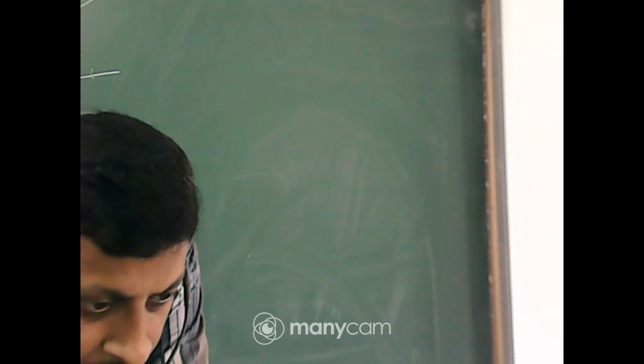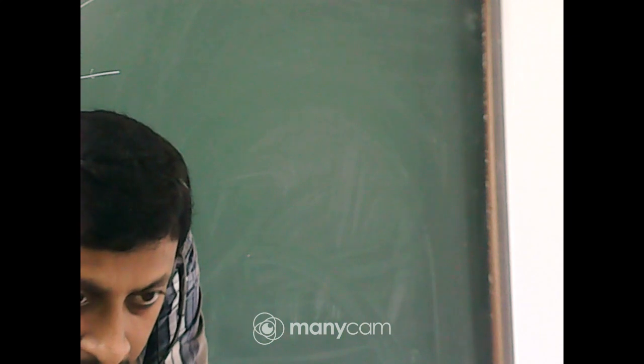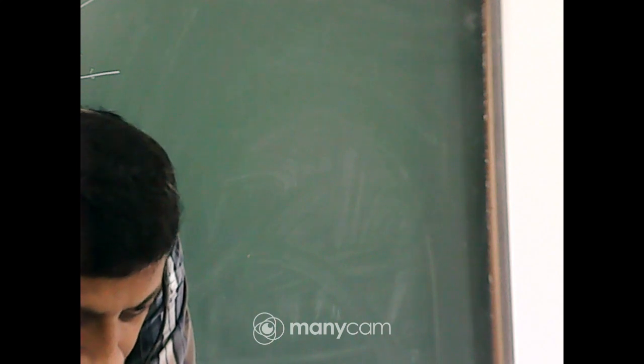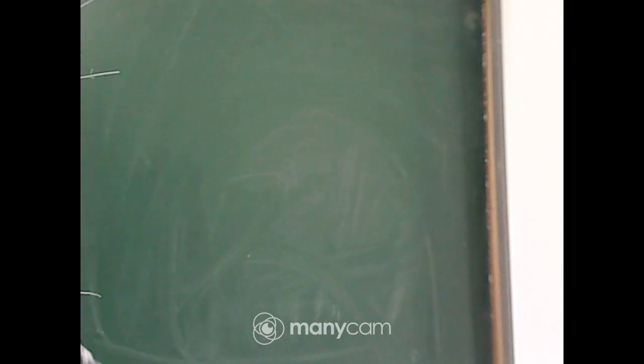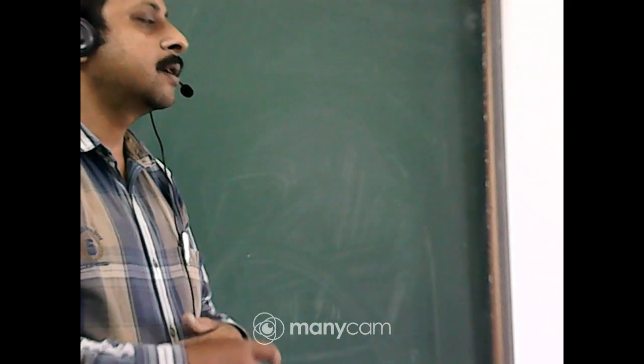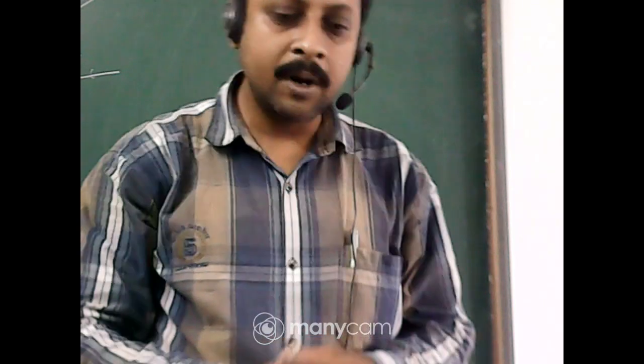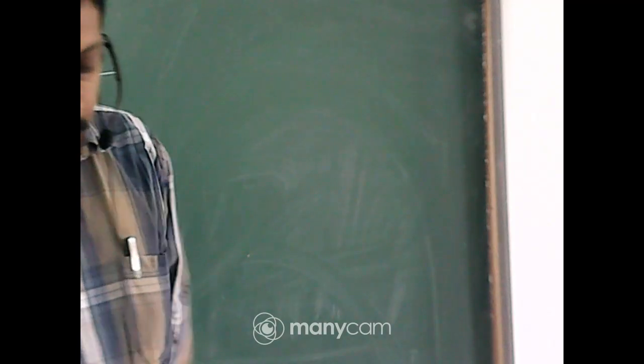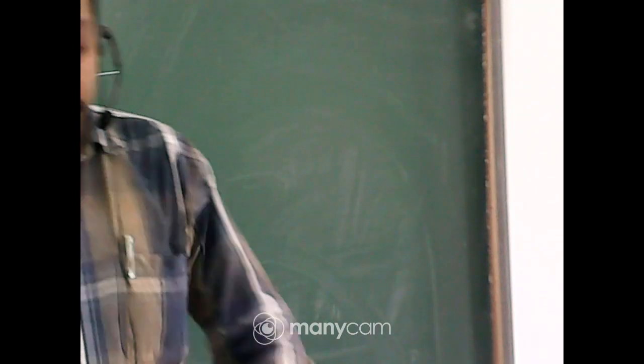Students, this is a class of accountancy and we are going through the chapter on accounting ratios. In the last class, yesterday, I already discussed turnover ratios — specifically fixed asset turnover ratio, working capital turnover ratio, and stock turnover ratio. Those three ratios I have already discussed.